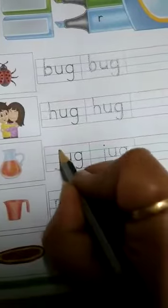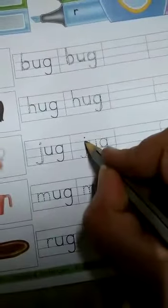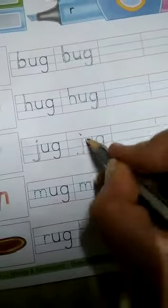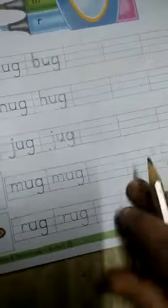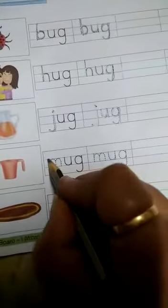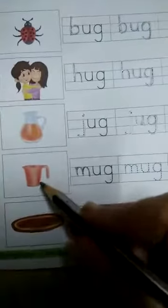Next is J sound. Ja aga jaga. Jug means this jar. Ja aga jaga, say and complete this. Next is M. M says ma ma aga mugger. Mug means this.